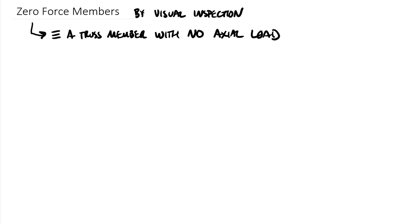Okay so zero force members by visual inspection. Alright and again here a zero force member, just put a little definition on here. This is defined as a truss member with no axial load. So axial means along the link so I could also say no tension and no compression.